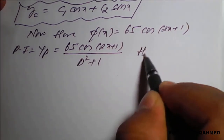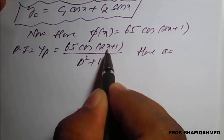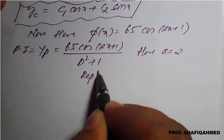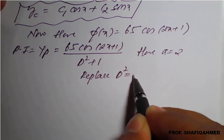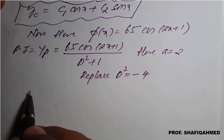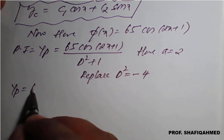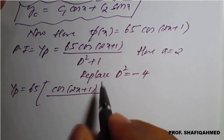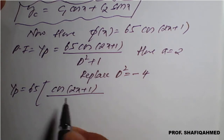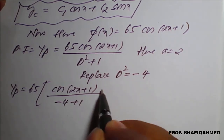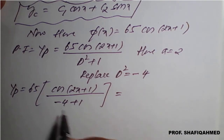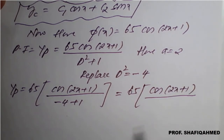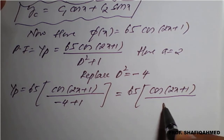Now we replace D² with -a², where a is the coefficient of x, which is 2. So we replace D² with -(2²) = -4. Therefore yp = 65 · cos(2x + 1) / (-4 + 1). Simplifying, -4 + 1 = -3.